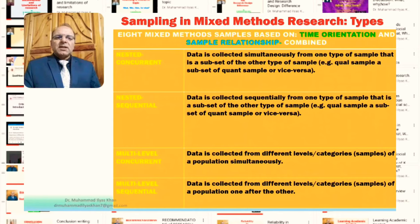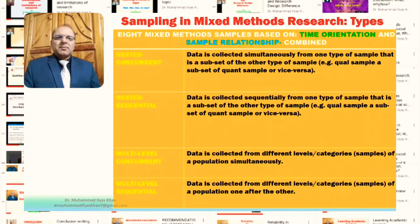The last one, the multi-level sequential, is where data is collected from different levels or categories of a population one after the other. Data collection takes place sequentially, the population is the same, and data is collected from different categories or subsets of the population. These are the eight ways in which mixed method research samples have been categorized.